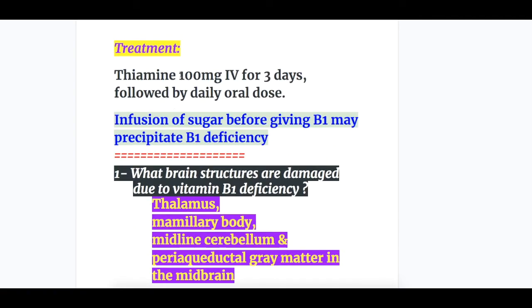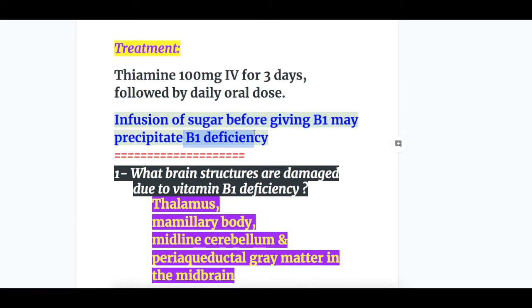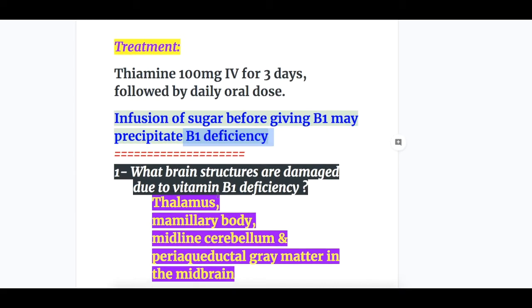Treatment: thiamine 100 mg IV for three days, followed by a daily oral dose. Infusion of sugar before giving vitamin B1 may precipitate vitamin B1 deficiency. Why? Because it increases lactic acidosis.